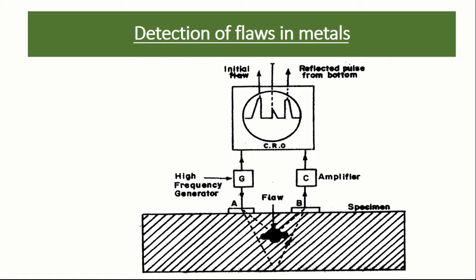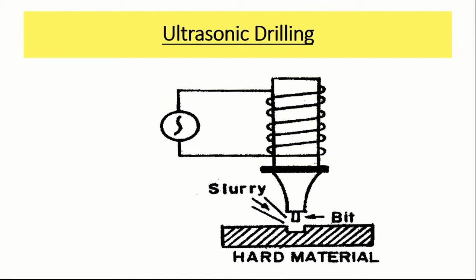Ultrasonic drilling: Ultrasonics are used for making holes in very hard materials like glass or diamond. For this purpose, a suitable drilling tool bit is fixed at the end of a powerful ultrasonic generator.